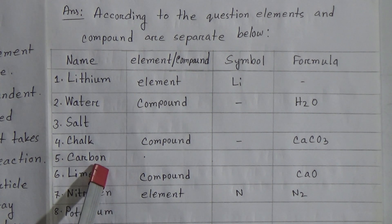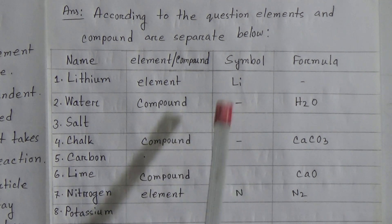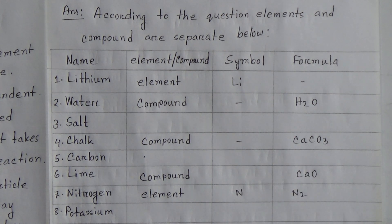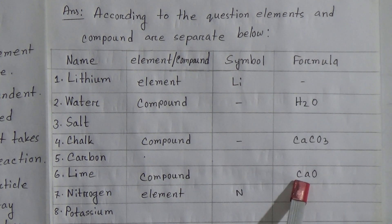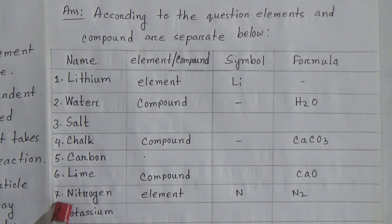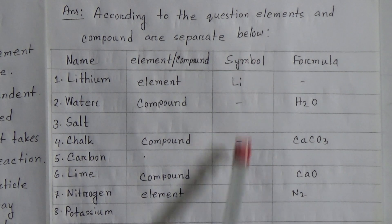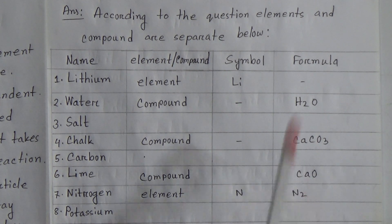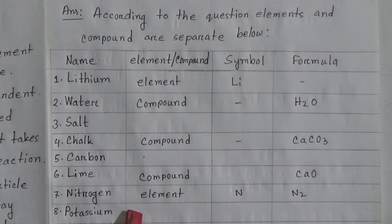Number 5 is carbon. Carbon is also an element and the symbol of carbon is C. There is no formula for it. Number 6 is lime. Lime is a compound, so there is no symbol, and the formula of lime is CaO, calcium oxide. Number 7 is nitrogen. Nitrogen is also an element and the symbol of nitrogen is N, and the formula is N₂. Number 8 is potassium — I didn't write the answer here. You will find this answer in your book, so you have to do it by yourself.